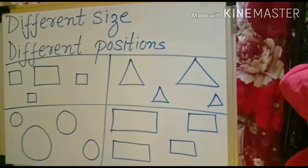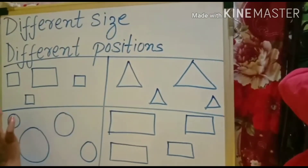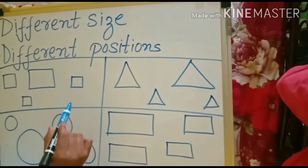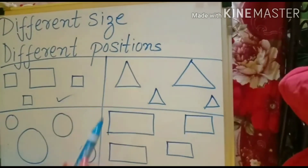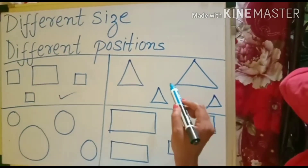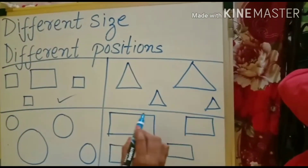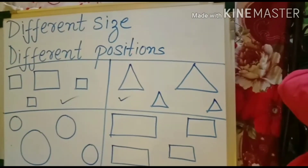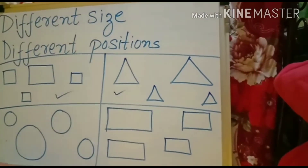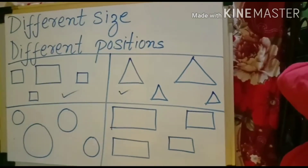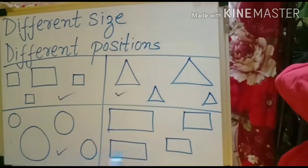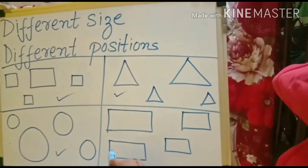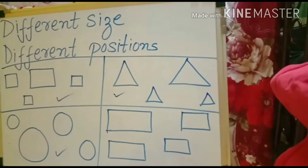Now can you see on the board? We have squares — they are all in different sizes and different positions. Now let us see the triangle. They are also in different sizes and different positions. Now let us have a look at the circle — it is also in different sizes and different positions. Now let us have a look at the rectangle. It also has different sizes and different positions.